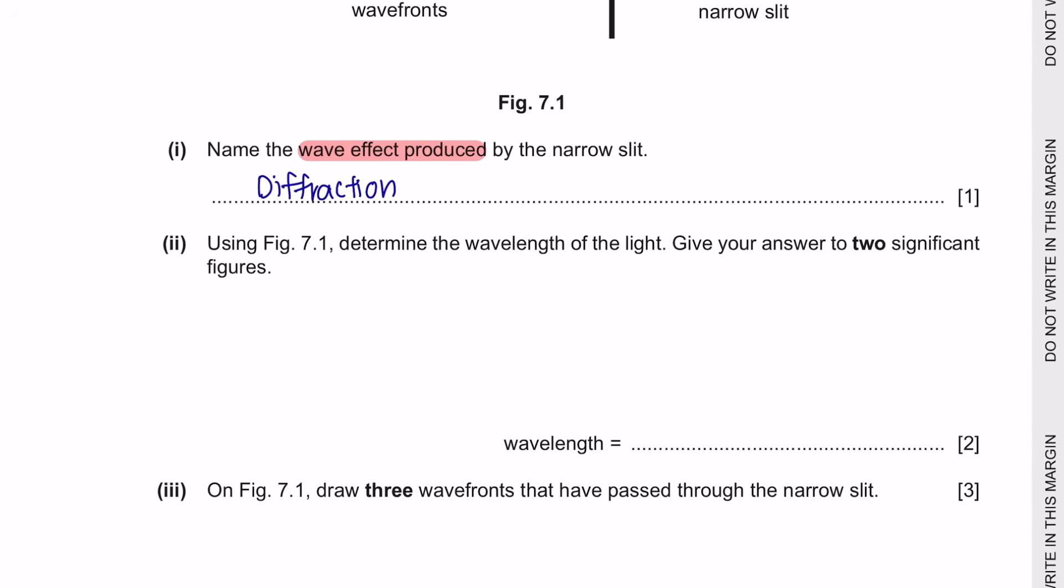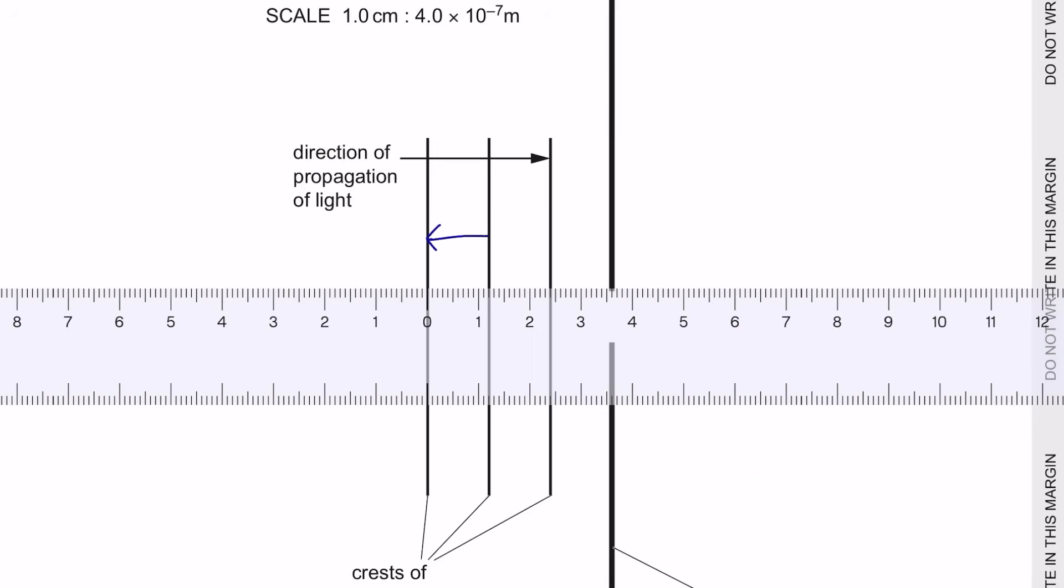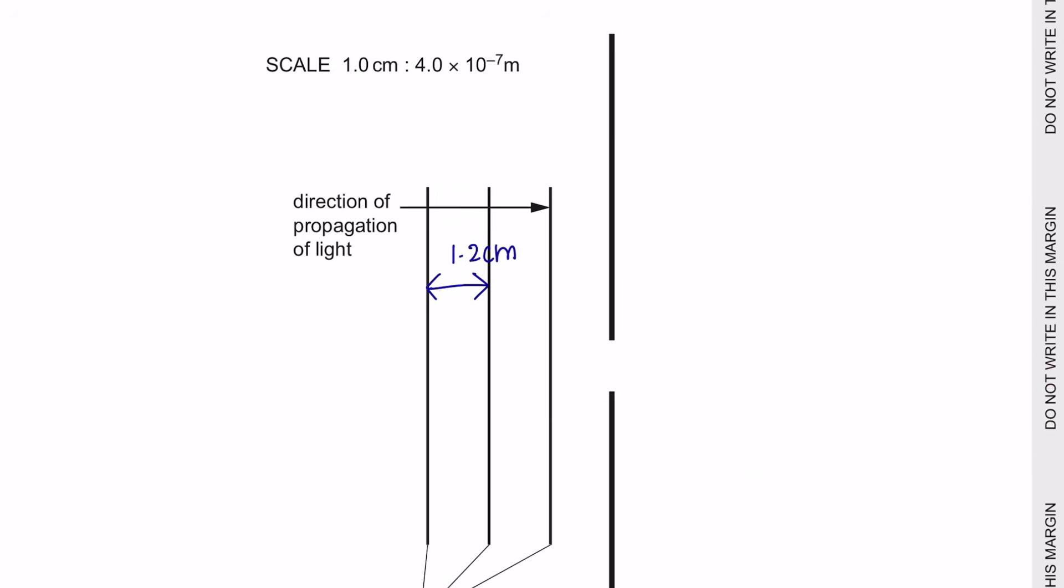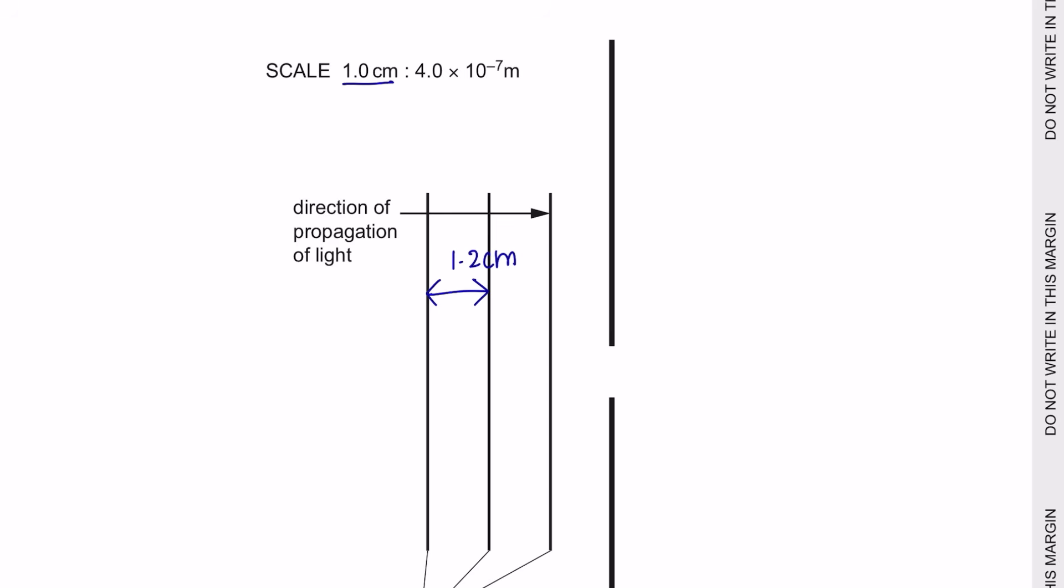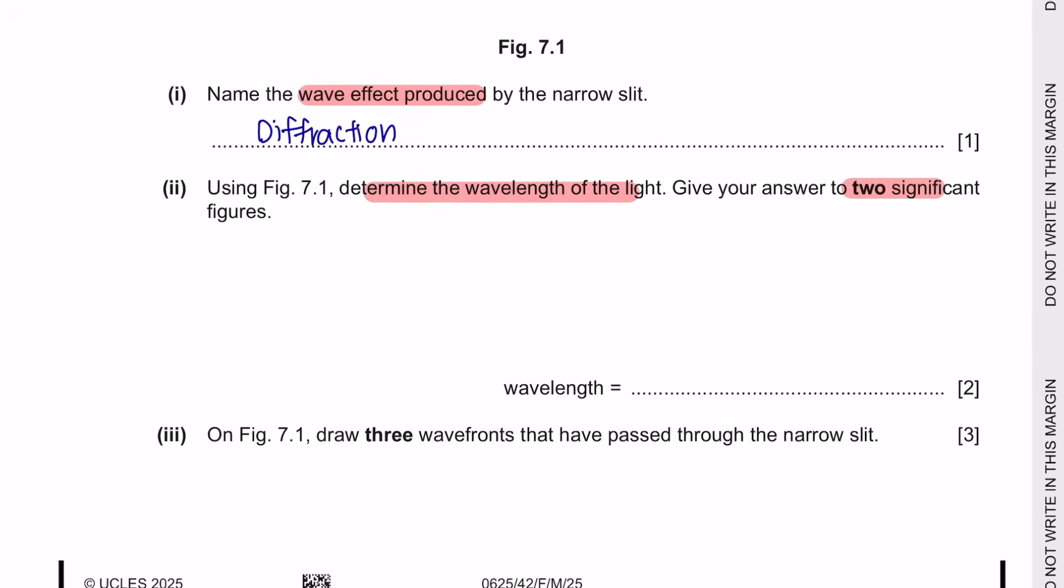Next part two, using figure 7.1, determine the wavelength of the light. Give your answer in two significant figures. According to the measurement provided in the image, the gap is 1.2 centimeters. And the scale states that every 1 centimeter is 4.0 times 10 to the power of negative 7. In two significant figures would be 4.8 times 10 to the power of negative 7.